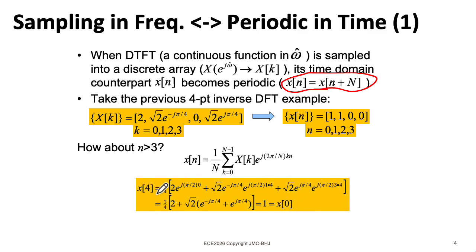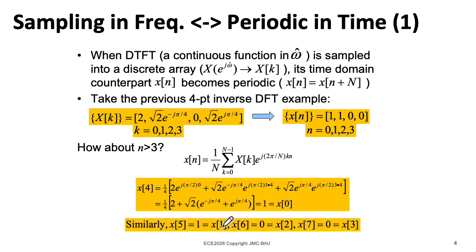For instance, if we were to plug in x of 4, which is outside of that range, and work things out, we wind up with the same thing as x of 0. Similarly, x of 5 winds up being the same as x of 1, x of 6 is the same as x of 2, and x of 7 is the same as x of 3.